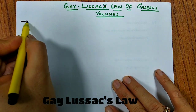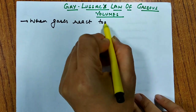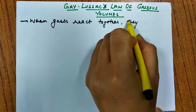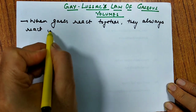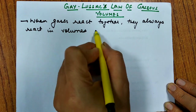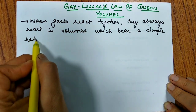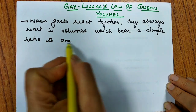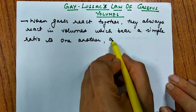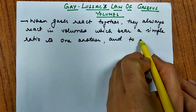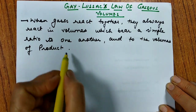What does this law state? It states that when gases react together, they always react in volumes which bear a simple ratio to each other. And at the same time, they bear a simple ratio to the volume of product, if the products are also in gaseous state.